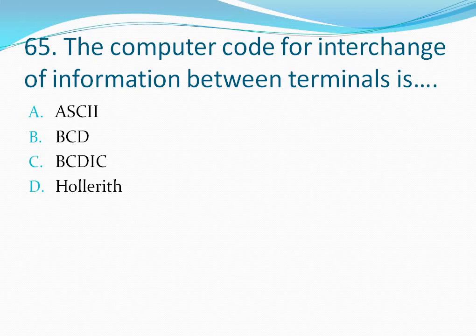Question number 65: The computer code for interchange of information between terminals is — your options are: option A ASCII, option B BCD, option C BCDIC, option D Hollerith. The computer code for interchange of information between terminals is ASCII, so the correct answer is option A.